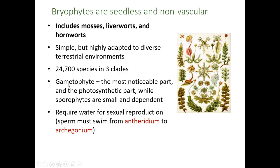The gametophyte — you remember from the life cycle — in this group of plants, the gametophyte is the main part of the plant. It's the most prevalent part; it's the part you see when you look at the plant. It's the green part. There are sporophytes, but they're very small and easy to overlook.